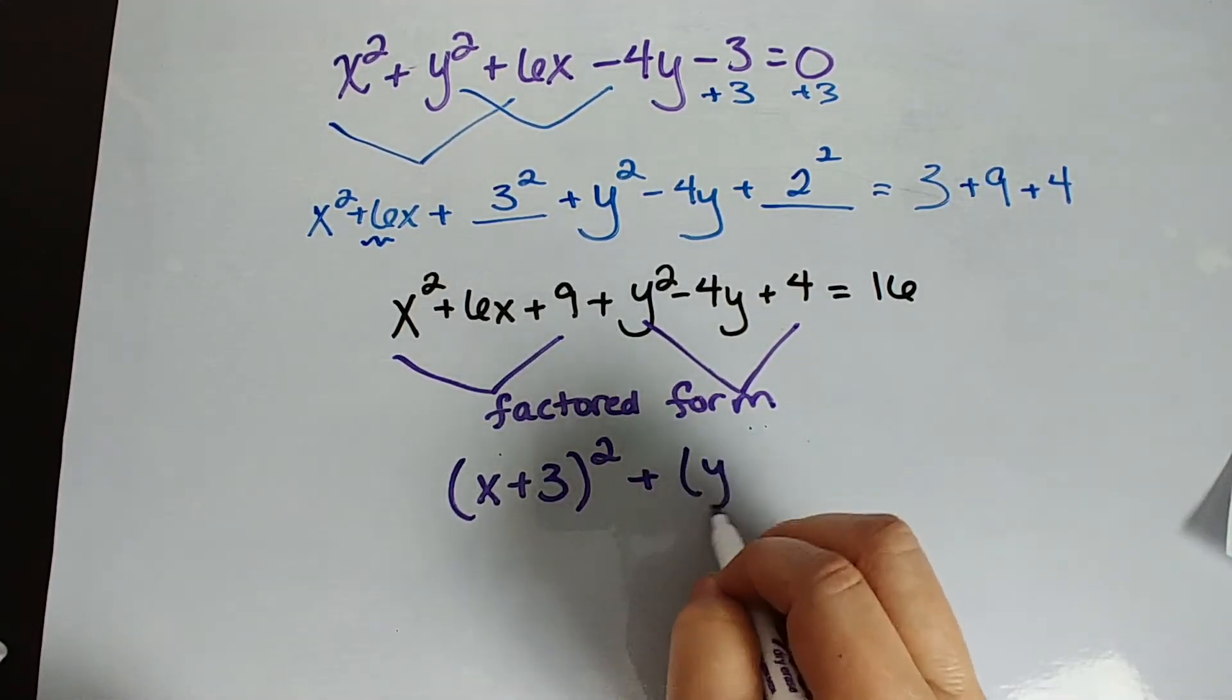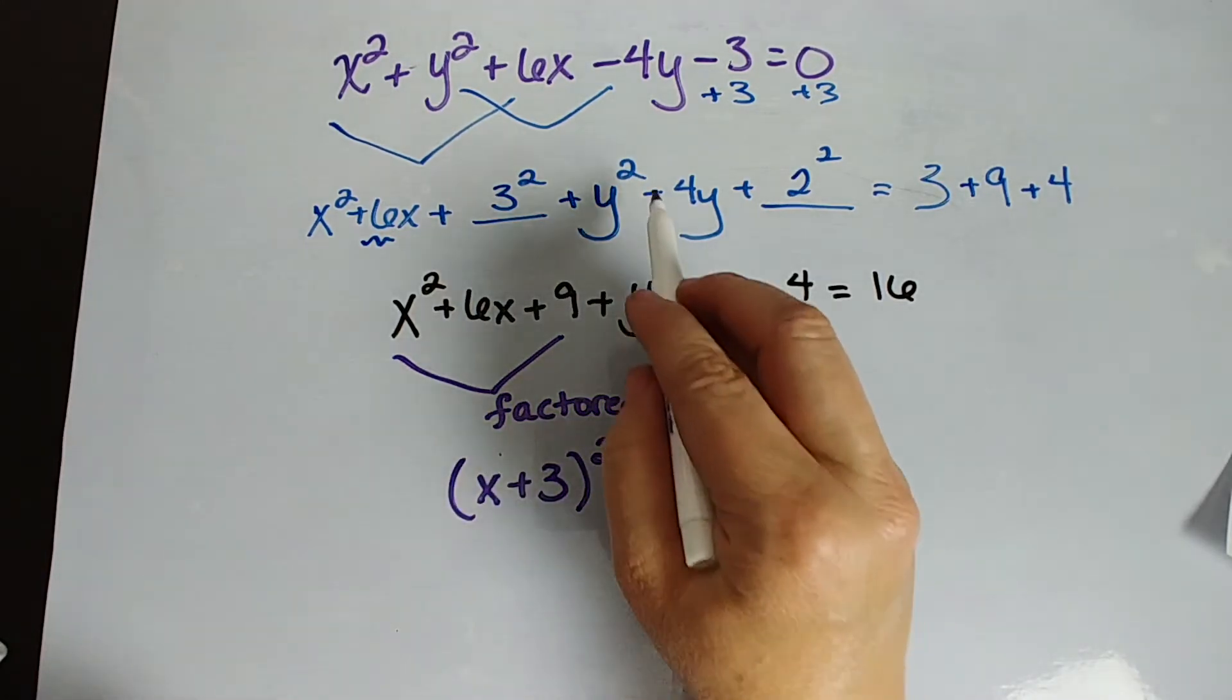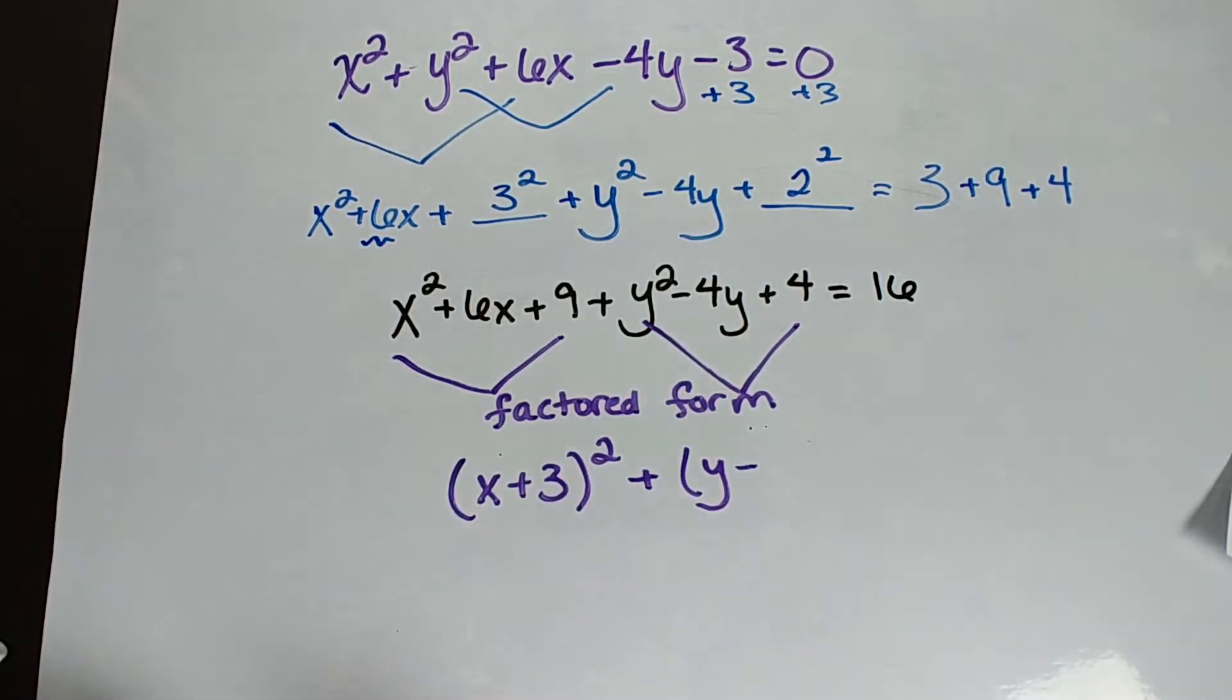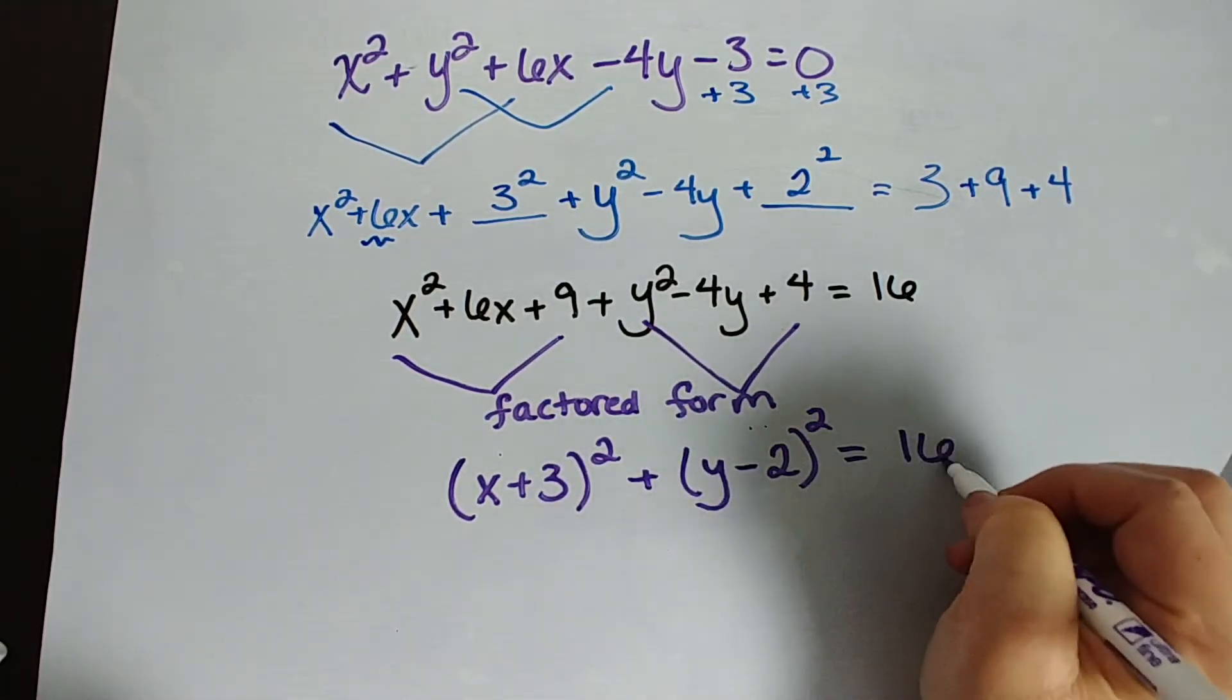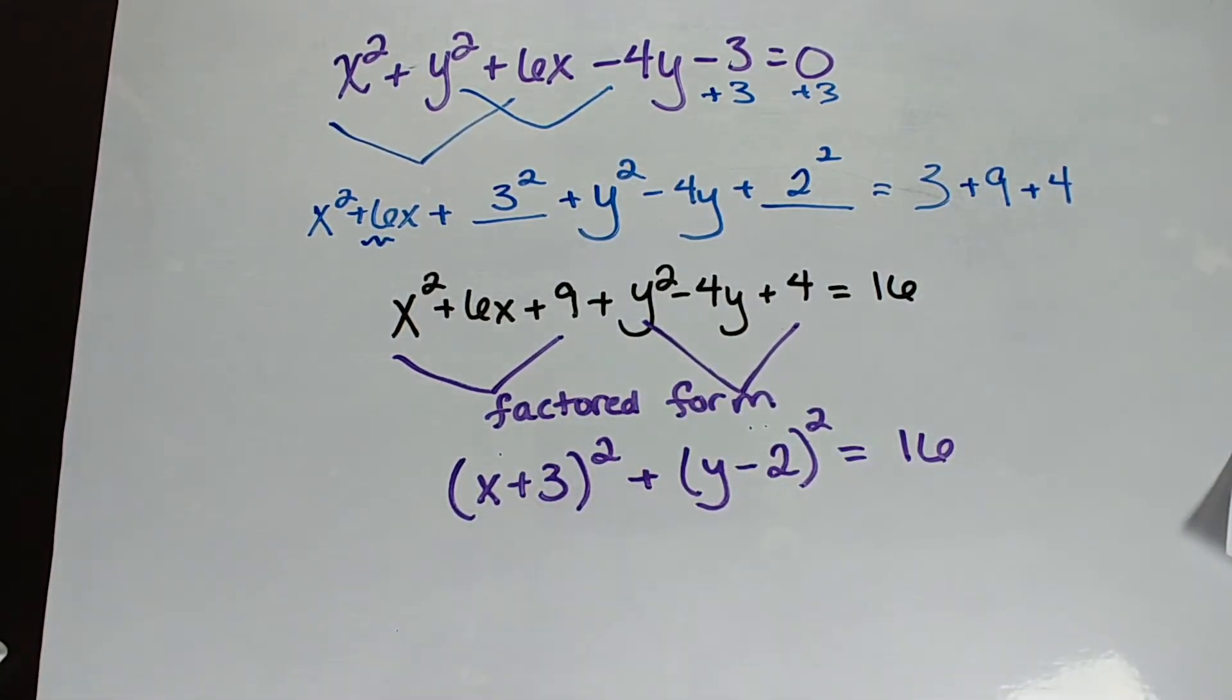We've got y squared, so it's going to be y. We have a negative or a subtraction symbol. What did we square? 2. So it's y minus 2 squared equals 16. Now it's better. It finally got better.